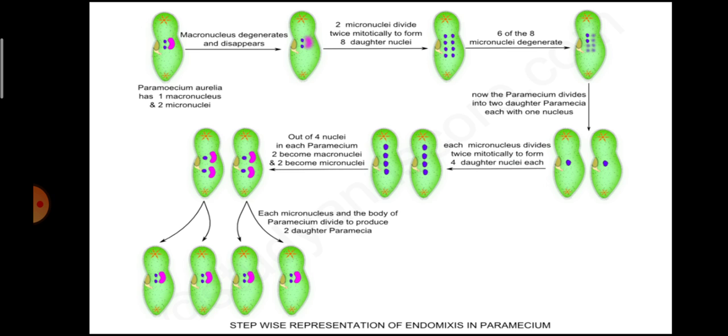आप चित्र में देख सकते हैं कि सबसे पहले Macronucleus disintegrate हुआ. दो Micronuclei ने दो बार Mitotically Divide करके आठ Micronuclei बनाए, जिनमें से 6 disintegrate हो गए और 2 बचे. Paramecia divides into 2 daughter Paramecia, each with 1 Nucleus. यह Micronucleus दो बार Mitotically Divide करेगा, जिससे चार daughter Nuclei बनेंगे - दो Macronuclei और दो Micronuclei. Each Micronucleus and the body of the Paramecia again divide, to produce 2 daughter Paramecia, एक single parent से 4 Paramecia बन जाते हैं.